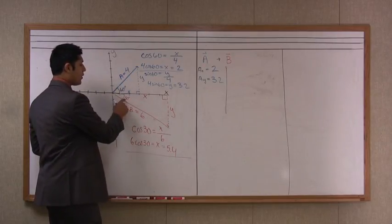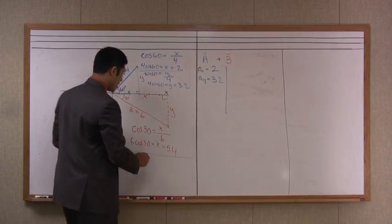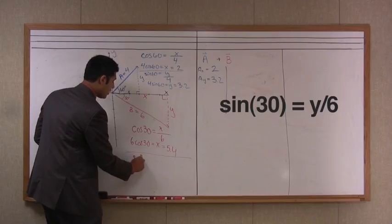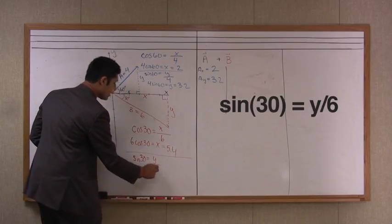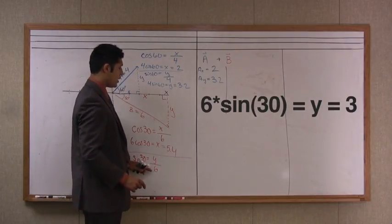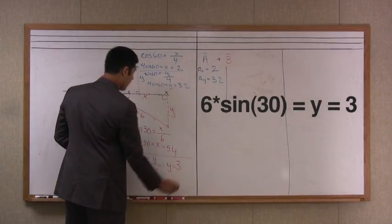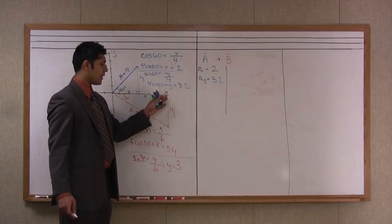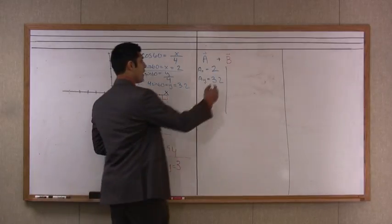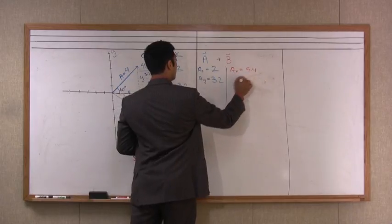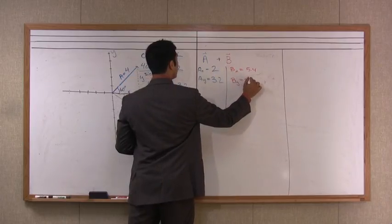So the y component's relationship to the 30 degree angle is again, it's opposite. And so we are going to want to use the sine function. So the sine of 30 is equal to y all over the hypotenuse, which is 6. So 6 times the sine of 30, which is 1 half, is equal to y, which is equal to 3. And what we can see here is that the y component is actually going in the negative direction. And so when I put in my values, I will say bx is equal to 5.4, and by is equal to negative 3.